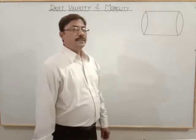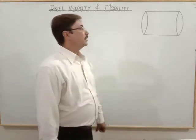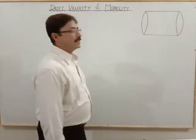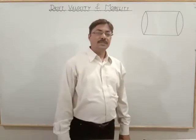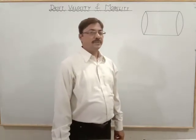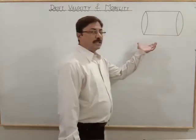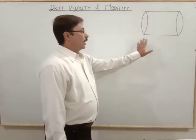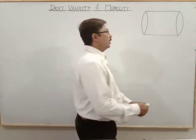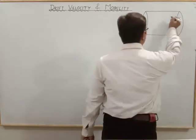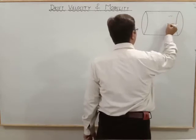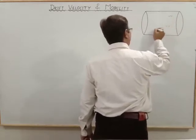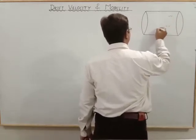Today we will start the topic drift velocity and mobility. We will understand what drift velocity actually is. Here you can see this conductor. In this conductor there are electrons, and these electrons are moving randomly here and there.